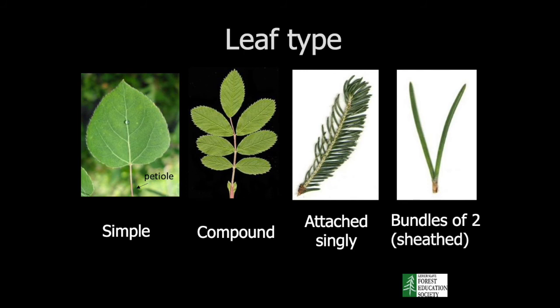Then we have leaf type. The broad leaves we are concerned with are either simple or compound. With a simple leaf, there's only one leaf blade per petiole. A compound leaf will have several leaflets coming off the petiole — note how the general outline of the compound leaf looks like a simple leaf, and the leaflets do not have a stem. For trees with needles, they can be attached singly off the branch, or bound together in bundles — if bound in bundles, they are classified as sheathed.